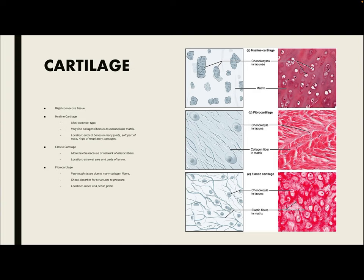Next, we have cartilage, which is a rigid and very hard connective tissue. There are three types of cartilage. There's hyaline cartilage, which is the most common type, located in the ends of the bones of many joints, the soft part of our nose, and around the rings of respiratory passages. Next, we have elastic cartilage, which is more flexible because of the elastic fibers, located in the external ears and parts of the larynx.